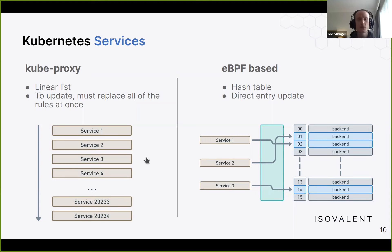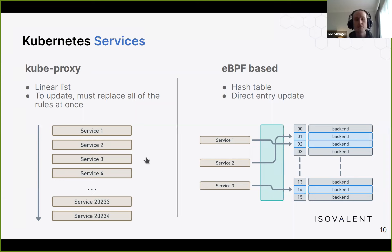Beyond per-packet efficiency, we can reevaluate why we're running this logic on every single packet at all. When the application connects to the service it's trying to connect to a specific virtual IP at the socket layer — so perhaps we could reduce the number of times we perform this virtual service translation and improve overall efficiency.